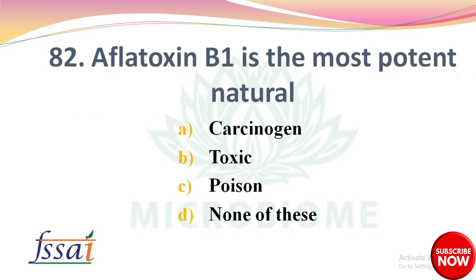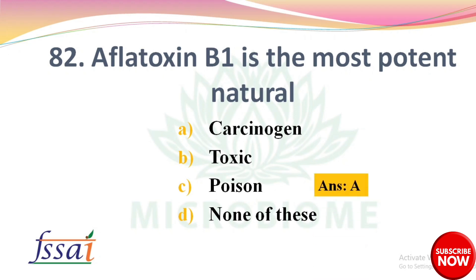Aflatoxin B1 is the most potent natural — what? Options: A) Carcinogen, B) Toxic, C) Poison, D) None of these. The right answer is option A: Carcinogen.